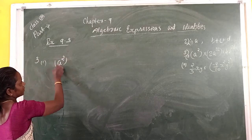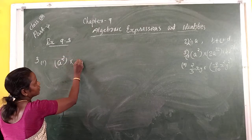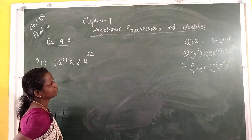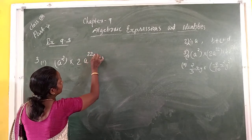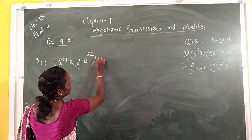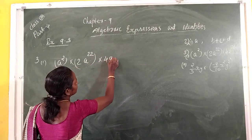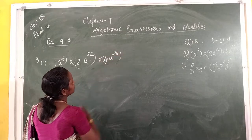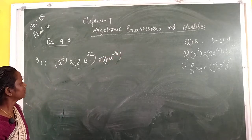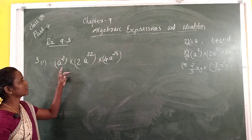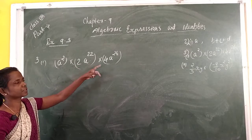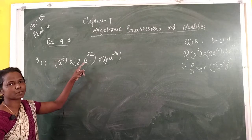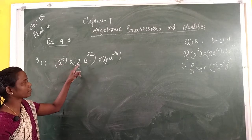The first question: A² multiplied by 2A raised to 22, multiplied by 4A raised to 26. This is three terms — 1, 2, 3 — and all terms are monomials. So this is monomial multiplied by monomial multiplied by monomial.